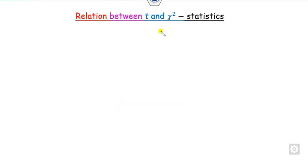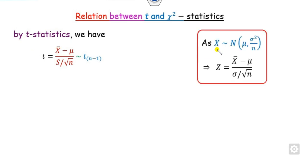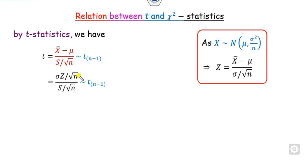Now we can derive the relation between T and chi-square. Starting with the T statistic, we need to find the value of x-bar minus mu. We know that if the x_i's follow a normal distribution with mean mu and are i.i.d., then the sample mean x-bar follows a normal distribution with mean mu and variance sigma-squared over n. So we define the corresponding z as x-bar minus mu divided by their standard deviation, giving us the T statistic with n minus 1 degrees of freedom.